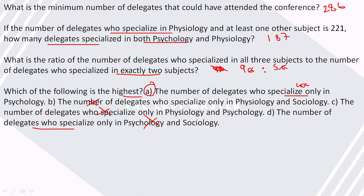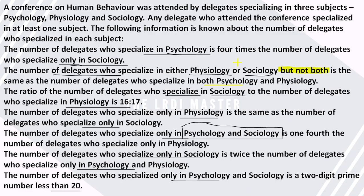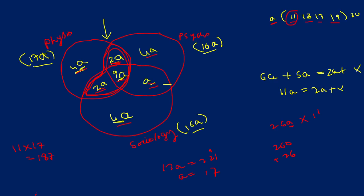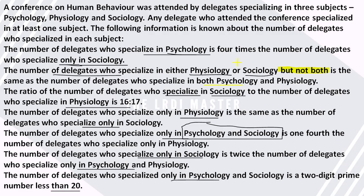So guys, this set is now complete. It was quite a good and easy set — the level was marked as difficult where I picked this mock from, but you can see how easily we solved the entire set. All that was needed was direct information converted into variables. Happy learning, thank you guys!